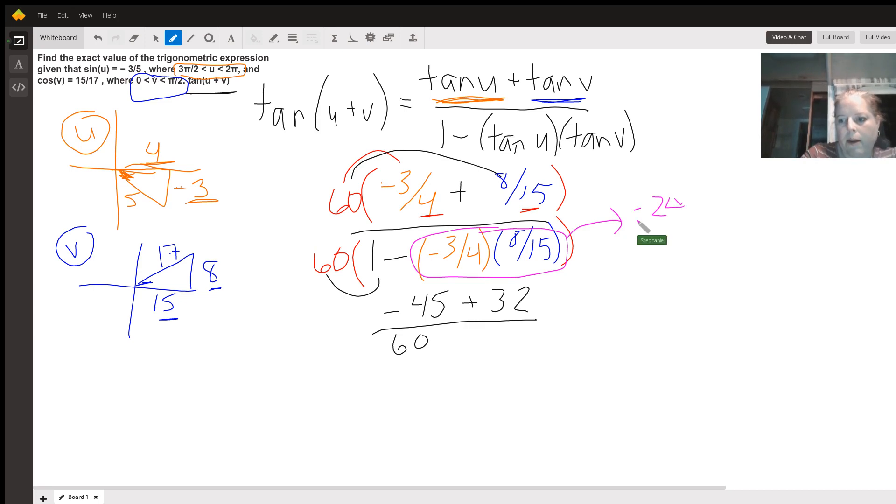And 4 times 15 is 60. So if you take 60 times this negative 24 over 60, you get a negative 24.